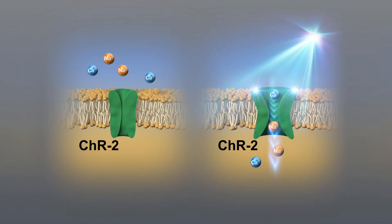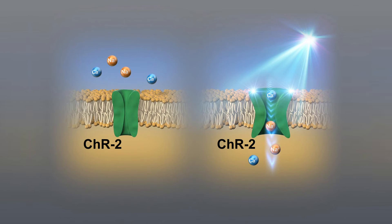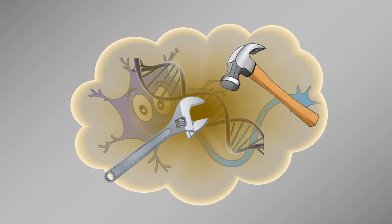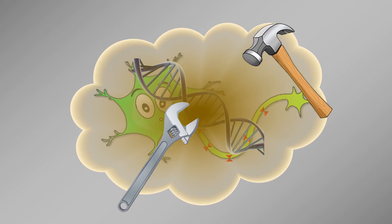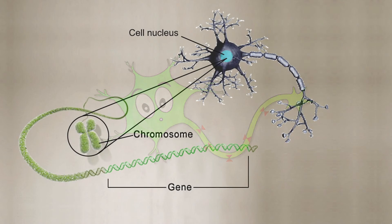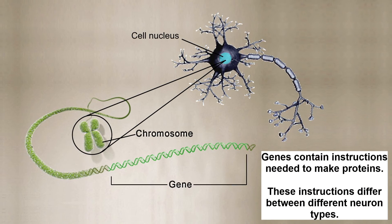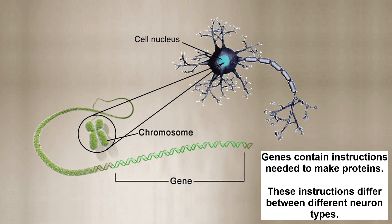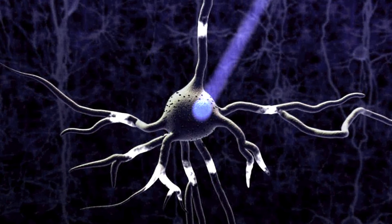But the question is, how do we get channelrhodopsin into a specific neuron? That is where we need some genetic engineering. The goal is to change the genetic makeup of a cell such that it will express channelrhodopsin. Importantly, the morphology and function of different cell types is to a large extent defined by the pattern of genes they express, and which genes they express determines, among other things, which ion channels the neurons have. So if we can change the genetic makeup of a cell, we can make it have light-gated ion channels.